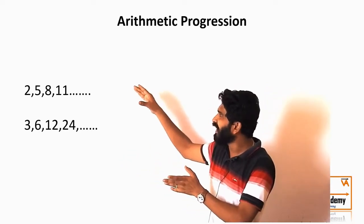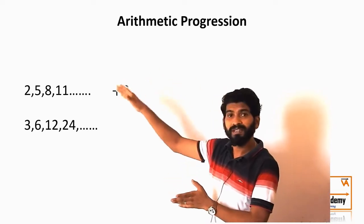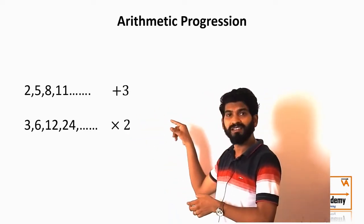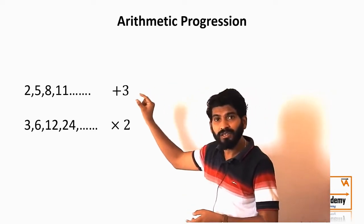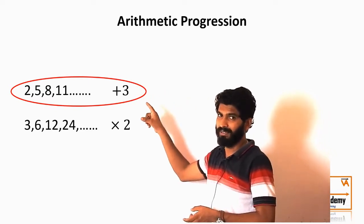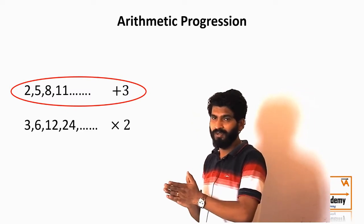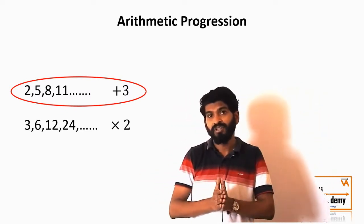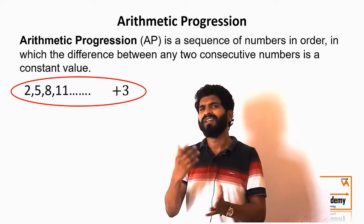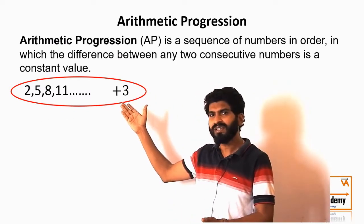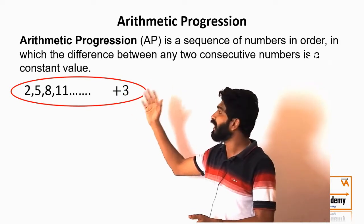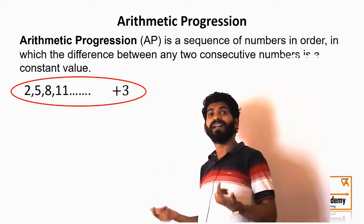In the first sequence we are adding 3 to each preceding term to get the next term, whereas in the second sequence we are doubling the number — multiplying it by 2 — to get the sequence. So a sequence in which we add a particular value to the previous term is called an AP or Arithmetic Progression. In simple terms, if the difference between any two consecutive terms is the same, the sequence is called an AP. You can see the difference between all consecutive terms here is 3, and hence this sequence is called an Arithmetic Progression.